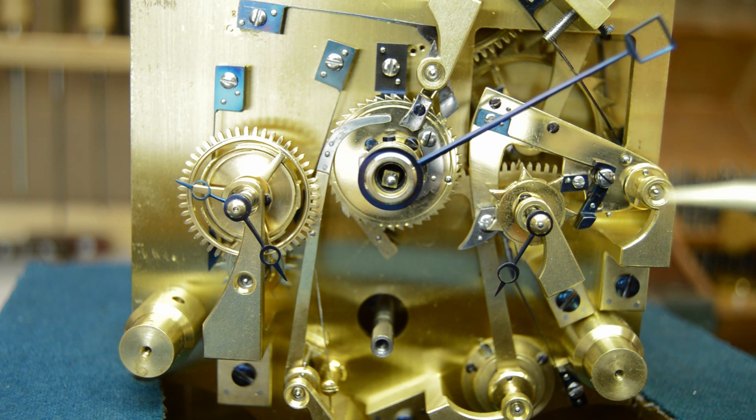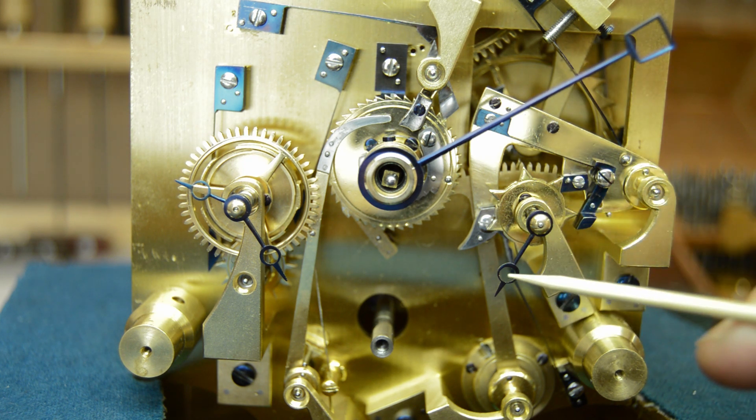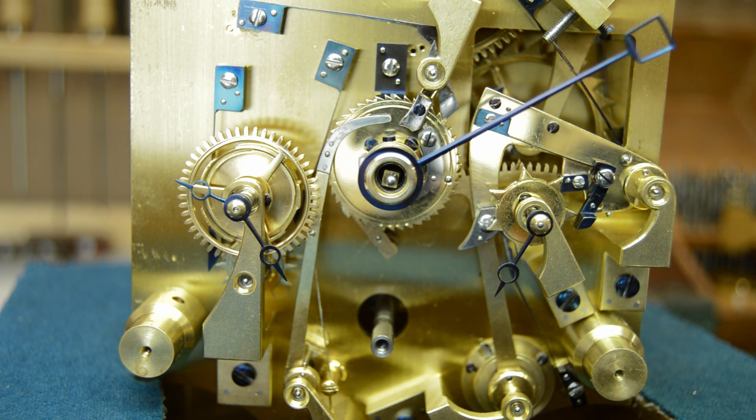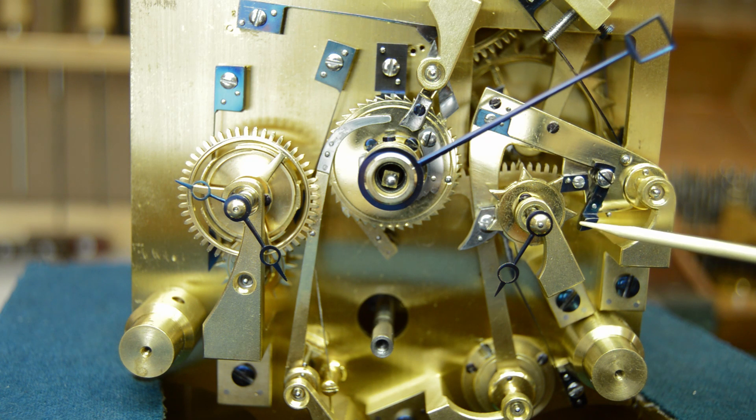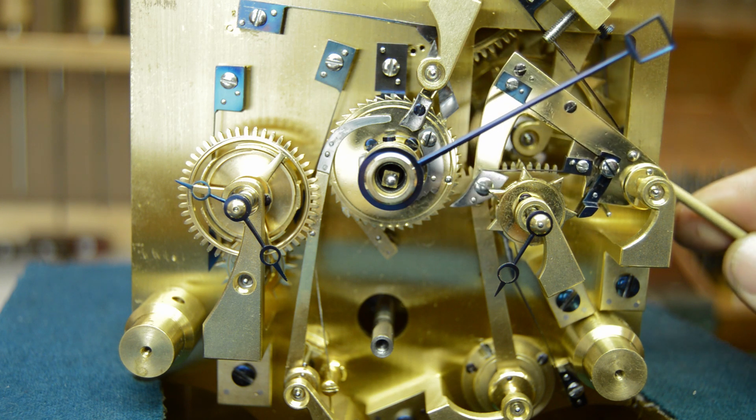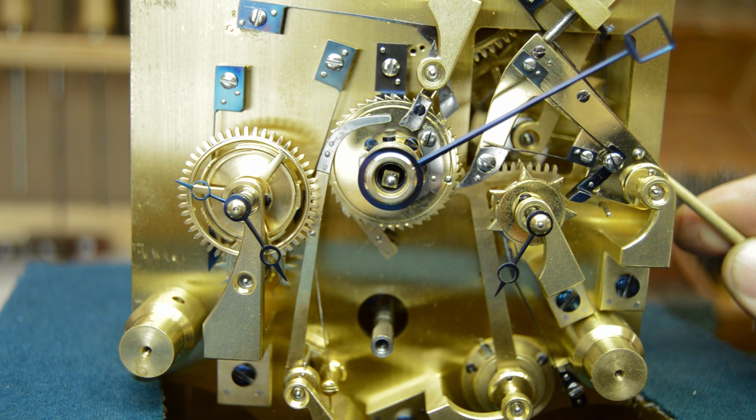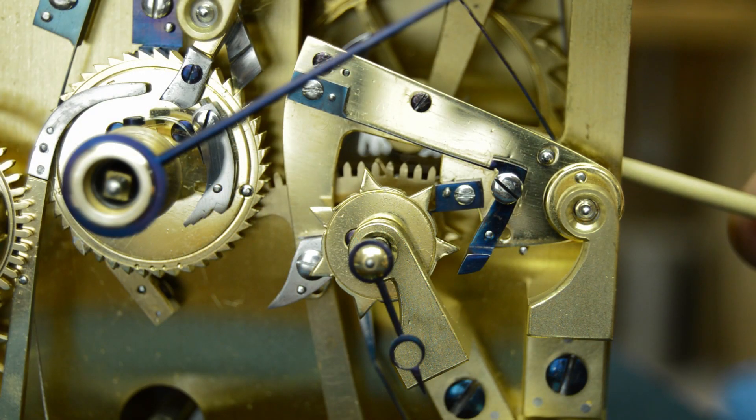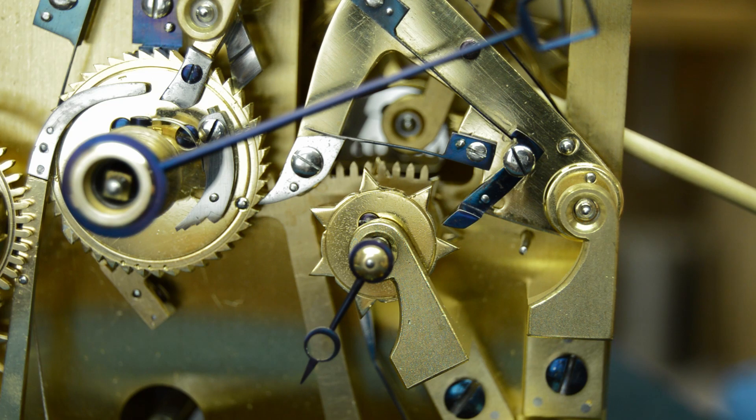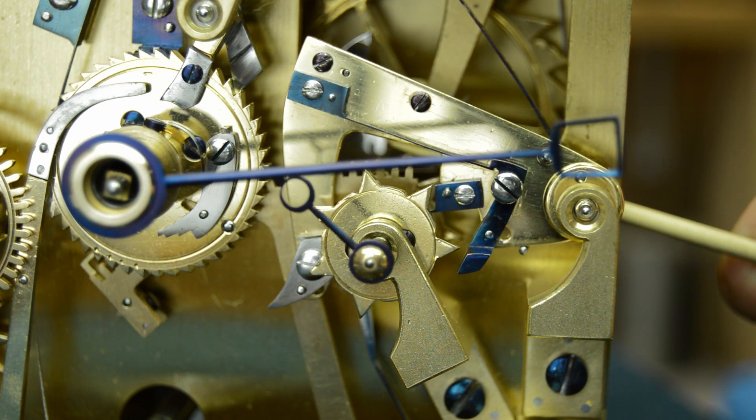Now the hands are driven in different ways, three different ways really. Starting with this, which is the day of the week. This is driven fairly simply by this little pole here. When the gravity arm is moving up it just flicks over the top, and then when it drops it pushes it round by one. So that puts it on to the next day of the week.